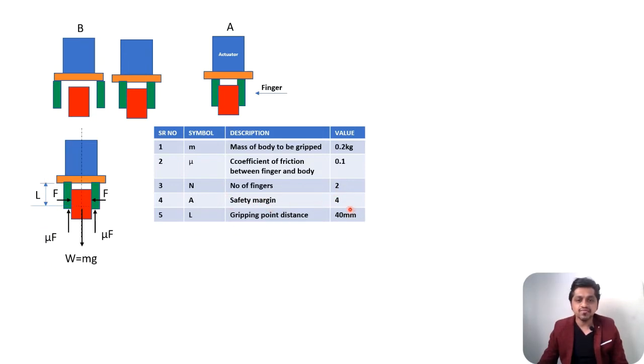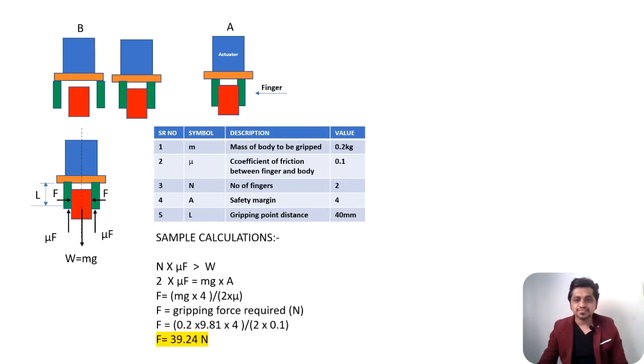We have sample calculations. You can see that mu times force is acting at this face and this face, so I have two faces. That will be N times mu into F. Now logically, this total force should always be greater than my weight of the body, otherwise it cannot hold the part. This is the basic logic behind it.